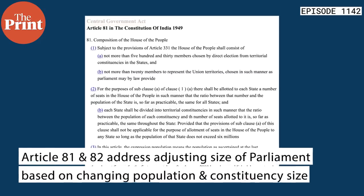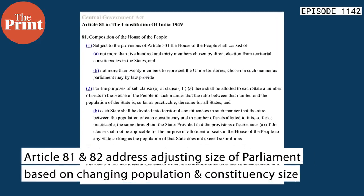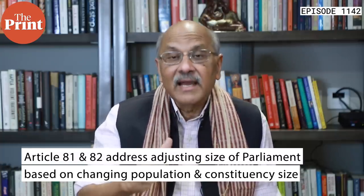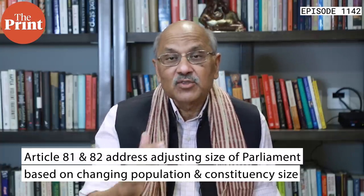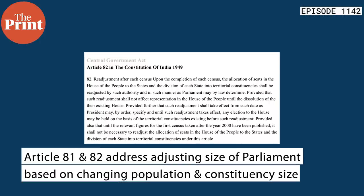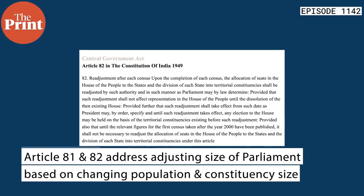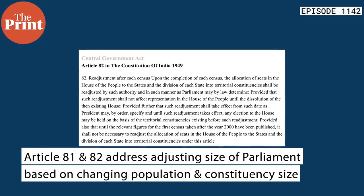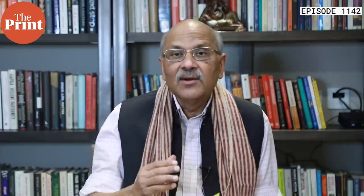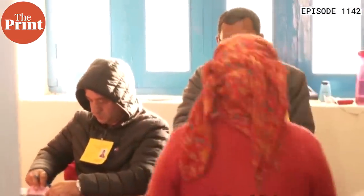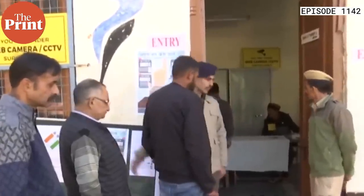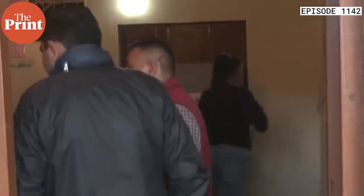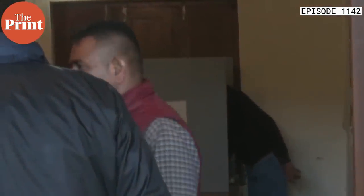Under the Indian Constitution, Article 81 says that after every decennial census, India's parliament size has to adjust to the population. Article 82 further says that as these constituencies are delimited or redefined, they must reflect the fairness of population proportion per constituency, so that voting power is distributed on the principle of one man one vote, one woman one vote, one Indian one vote. Now that's a bit of a problematic issue because not all states have their populations growing at the same rate.